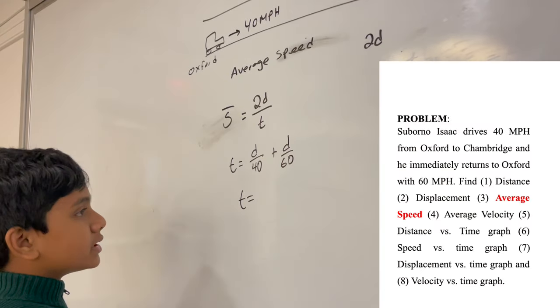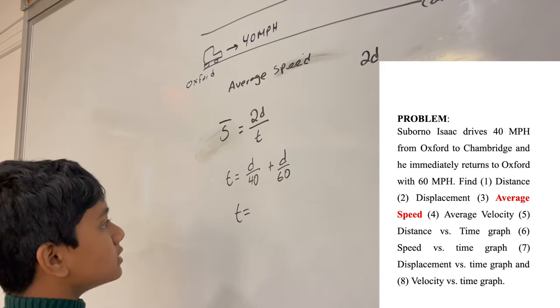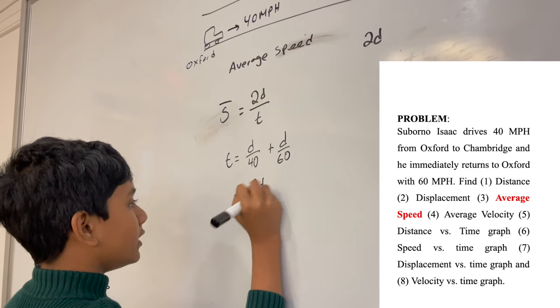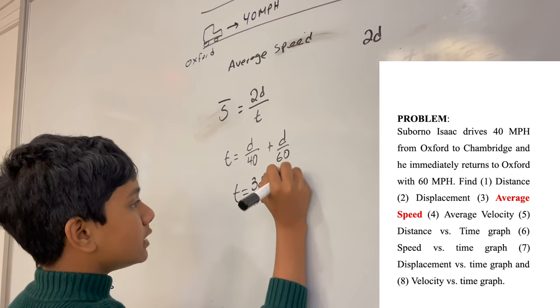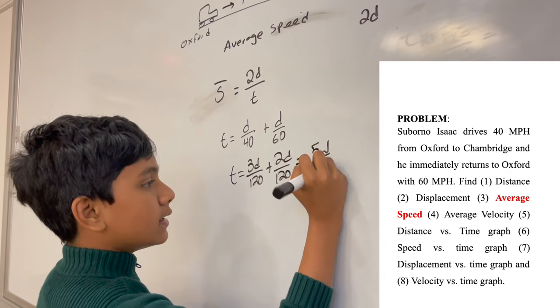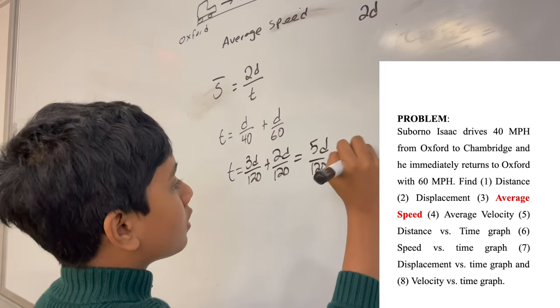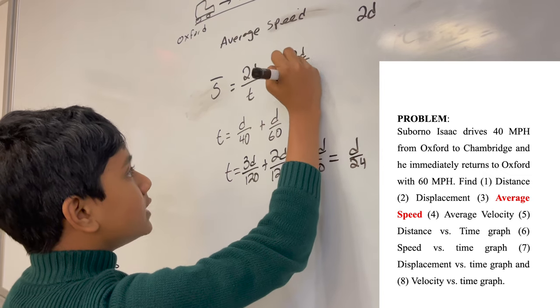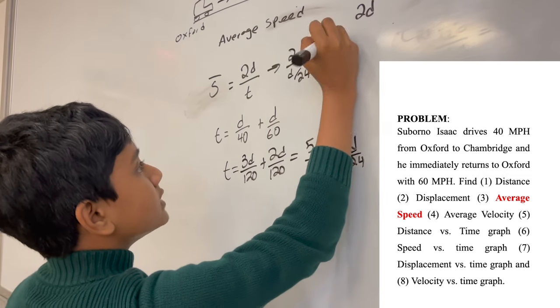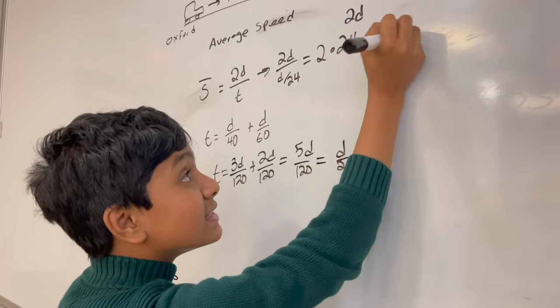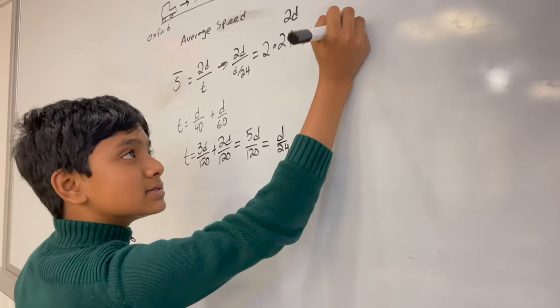Now you just common denominator these things. So here you have 40, here you have 60. So you have 3d over 120 plus 2d over 120 equals 5d over 120 equals d over 24. So that means that you get 2d over 24 which is 2 times 24 or 48 MPH. That is correct.